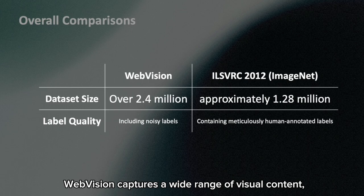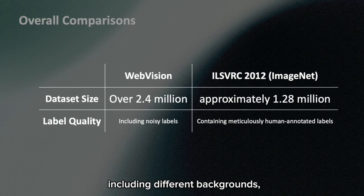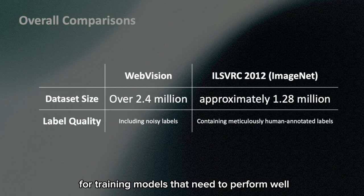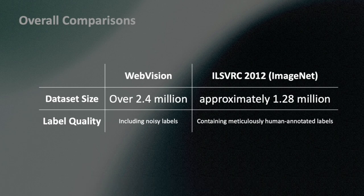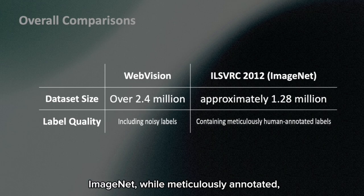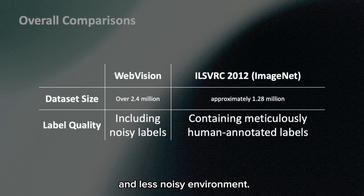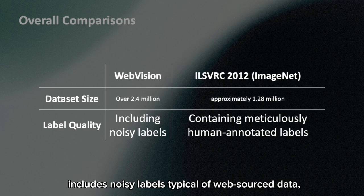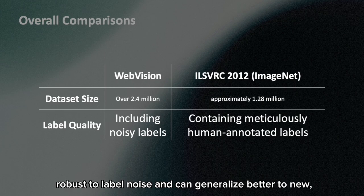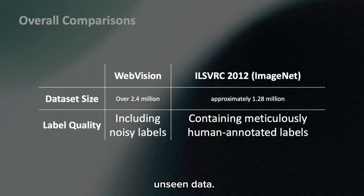WebVision captures a wide range of visual content, including different backgrounds, lighting conditions, and perspectives. This diversity is crucial for training models that need to perform well in varied real-world scenarios. Regarding label quality, ImageNet, while meticulously annotated, represents a more controlled and less noisy environment. WebVision, on the other hand, includes noisy labels typical of web-sourced data, providing a more realistic training scenario. This helps in developing models that are robust to label noise and can generalize better to new, unseen data.